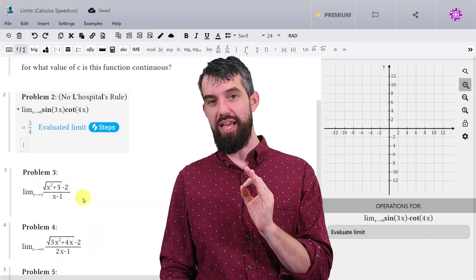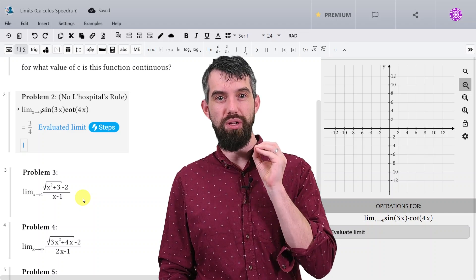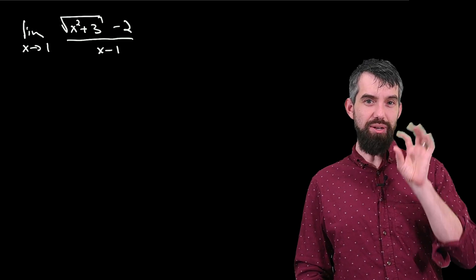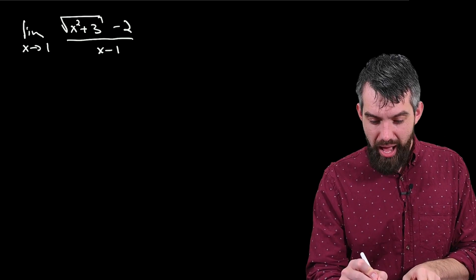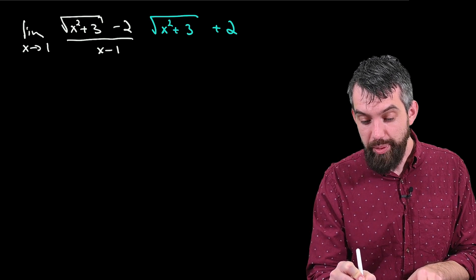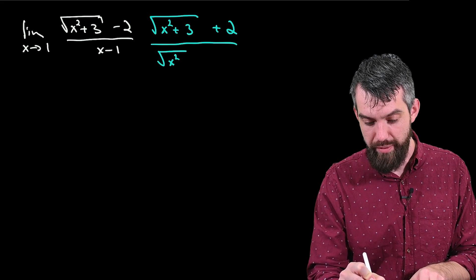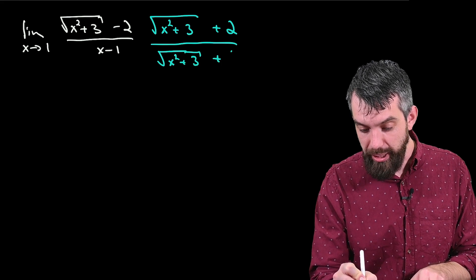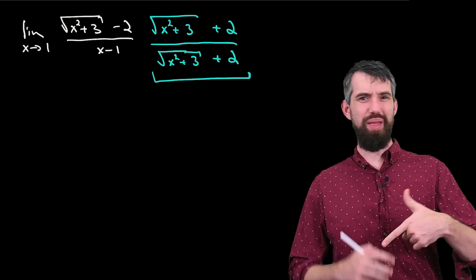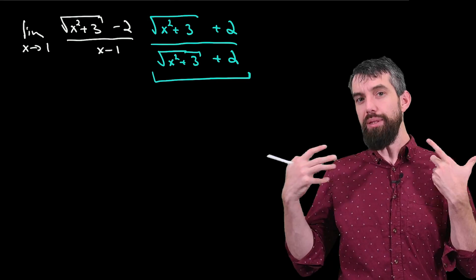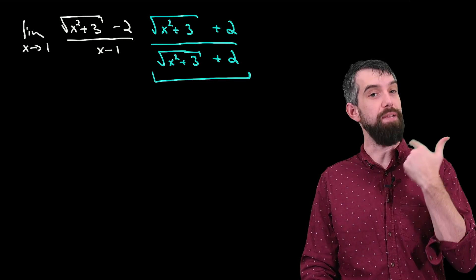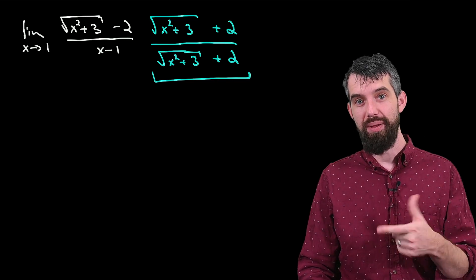I see the square root and immediately think: I want to do the radical conjugate. I've written it down, and I'm going to multiply by the conjugate. The expression is a square root minus something, so I multiply by the square root of x squared plus 3 plus 2, both top and bottom. This is the radical conjugate — just a funny version of 1. How do I come up with this? It's pattern recognition: when I see a difference where one term is a square root, this is the algebraic trick that comes to mind.